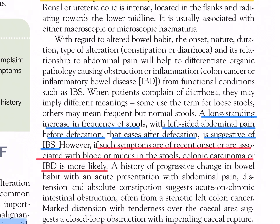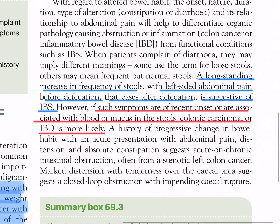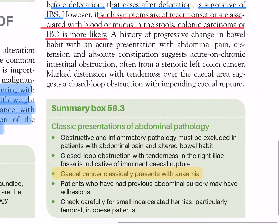However, if such symptoms are of recent onset or are associated with blood or mucus in the stools, colonic carcinoma or IBD is more likely. A history of progressive change in bowel habit with an acute presentation of abdominal pain, distension, and absolute constipation suggests acute-on-chronic intestinal obstruction, often from a stenotic left colon cancer. Marked distension with tenderness over the cecal area suggests a closed-loop obstruction with impending cecal rupture.